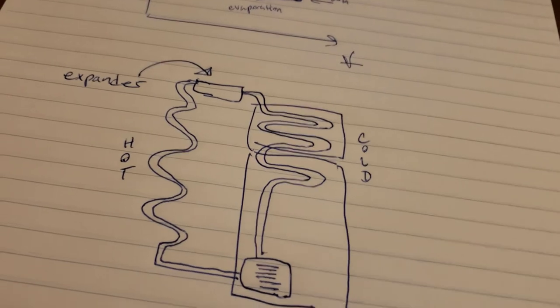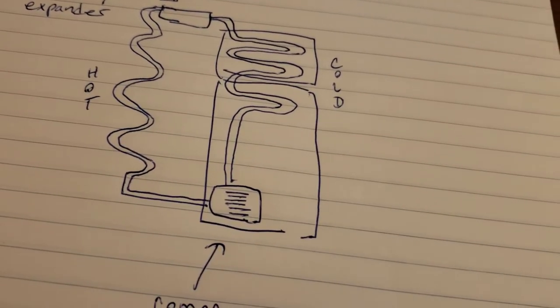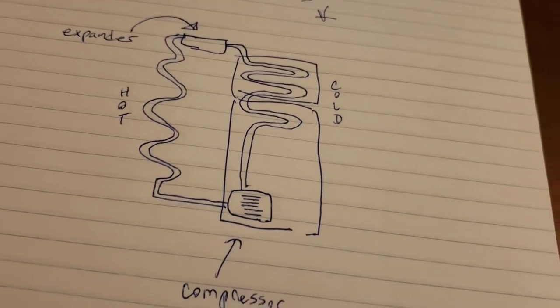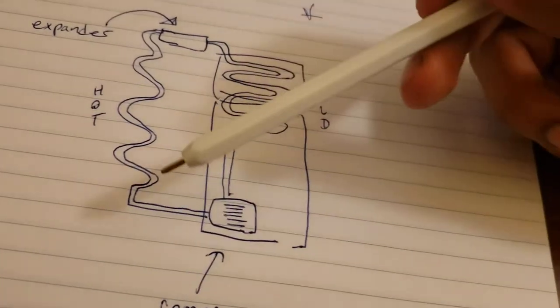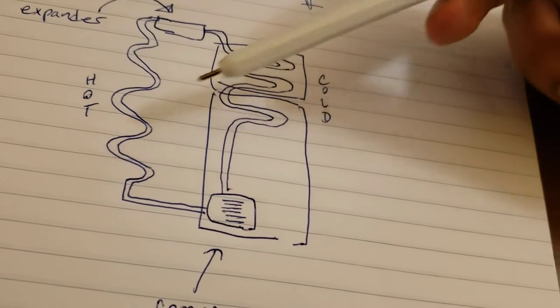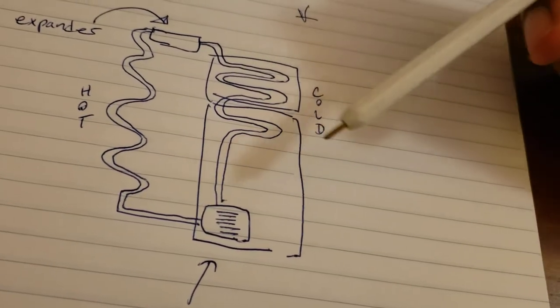So as for how the fridge actually takes thermal energy out of the cold object, so we basically, how a fridge works is there's a fluid inside like a tubing that runs through the refrigerator.